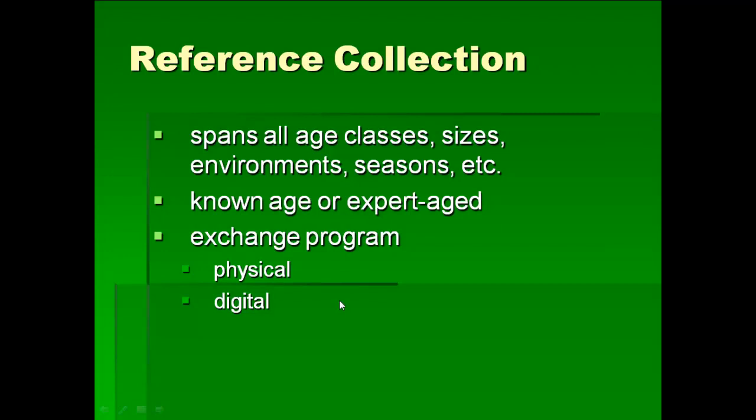This reference collection is very important but also very difficult to get. You want something that spans all age classes, all sizes, all environments, all seasons — a really good collection of structures representing the whole suite of exposure your fish can have. You want these to be known-age ideally, but you can get by with expert-aged. If we can't validate the aging for many of these fish, we have to accept that over time, if enough experts agree that a fish is age 2 or age 3, that gives the age estimate some level of validity.